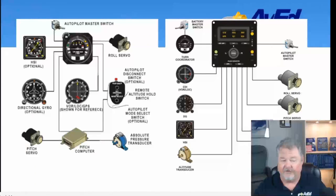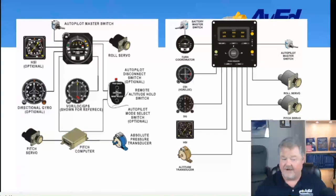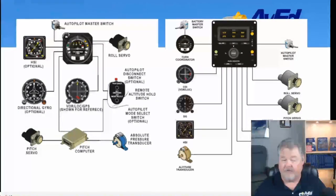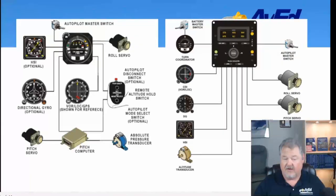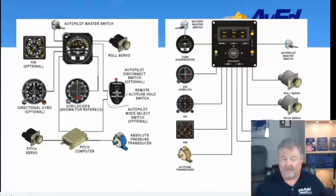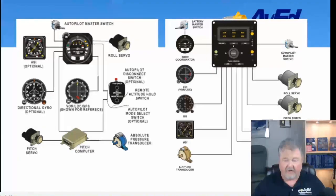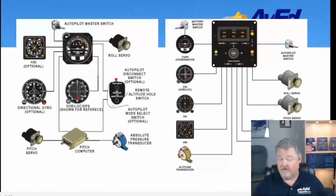Looking at the 20 and 30, you can have an HSI that will run both the NAV — VOR/localizer — or the HSI heading select. Or it can be a gyro by itself, or you can have a separate VOR/localizer or GPS indicator to drive it. It's capable of any one of those systems. You could have a remote autopilot disconnect switch — it's optional, because you can always disconnect from the control panel. It's nice to have it over the thumb on the control yoke. It also has a remote altitude hold switch.